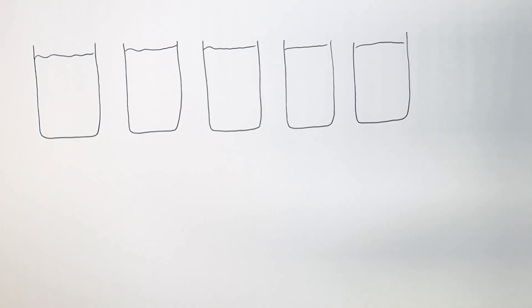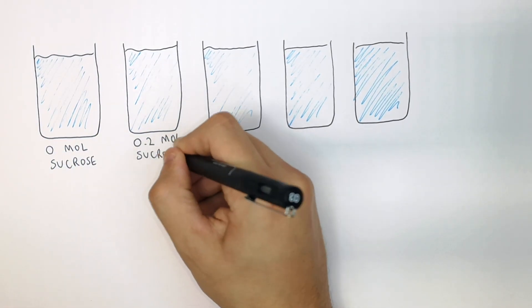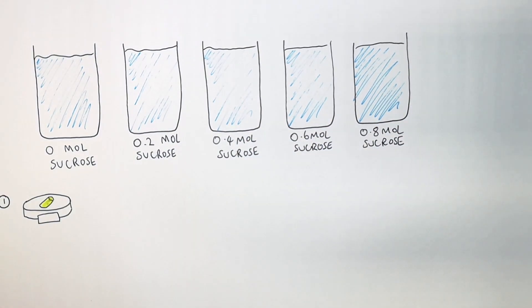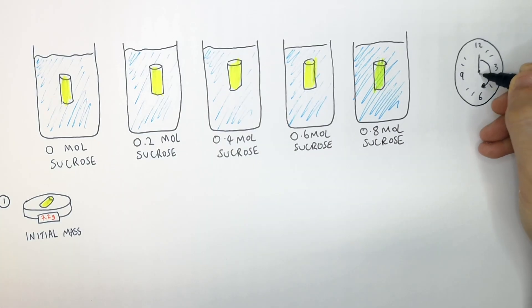Now we need to set up the beakers of water with different sugar concentrations in them. So you firstly have to measure the initial mass of the potato, and you do this for all of your potato cylinders, and then you place them inside the differing sugar concentrations for the same amount of time. So in this case, they all stay in the sugar solutions for 30 minutes only.